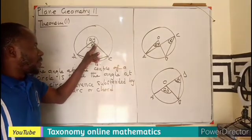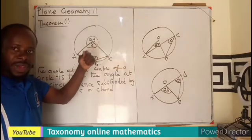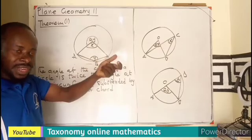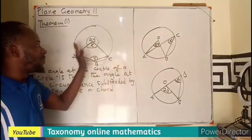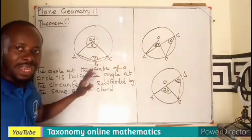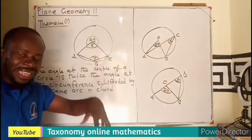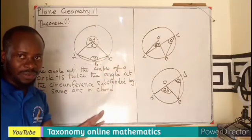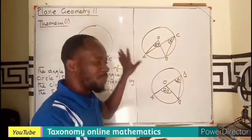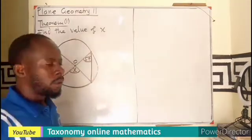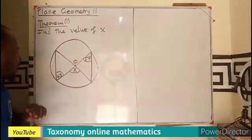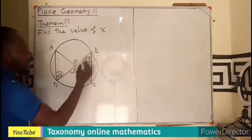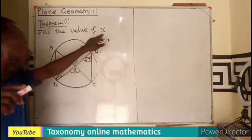Don't forget we can find the angles X and Y using the fact that total angles at a point give 360 degrees. These are the various configurations of Theorem 1, which says the angle at the center is twice the angle at the circumference. Now pause the video — given the diagram labeled A, B, C, D, try to find the value of X.